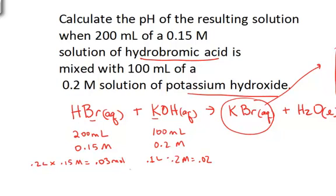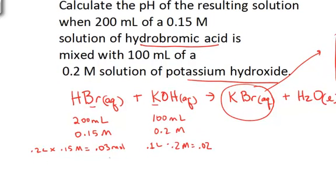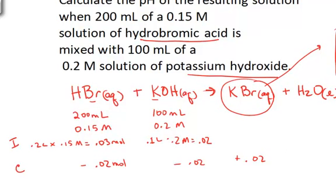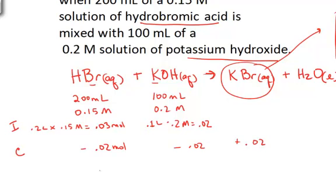We're reacting 0.03 moles of HBr with 0.02 moles of KOH. Since acid-base reactions go to completion and it's a one-to-one molar ratio, the initial amounts change as we react away all of the limiting reagent. Since there's less KOH, that's the limiting reagent. The change is minus 0.02 moles for both reactants, and we produce 0.02 moles of potassium bromide salt — but it's a spectator, so it won't affect the pH. At the end, we have 0.01 moles of HBr left and no KOH remaining.